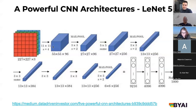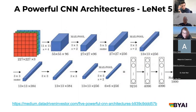Kernels are parameters — not hyperparameters — that get tuned by the network. What you define in the architecture are hyperparameters: how many filters you've got and the size of those filters. The network then figures out the actual numbers in those filters.